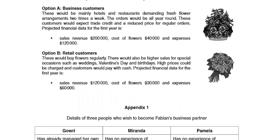For option B, which are retail customers, they'd buy flowers regularly. There'd also be higher sales for special occasions such as weddings, Valentine's Day and birthdays. Higher prices could be charged and customers would pay with cash. The projected financial data for the first year is revenue of $120,000, cost of making the flowers of $30,000, and expenses of $60,000.